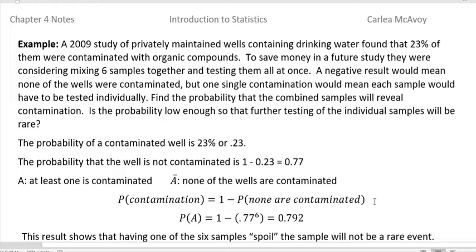Remember, we always, the one thing we're looking for here is at least one. So if none are contaminated, that's zero, and that's what we are going to subtract from 1. So we're looking at that 77 percent or 0.77, and we're testing six at a time. So 0.77 to the sixth power, and then subtract that from one, and we get 0.792.